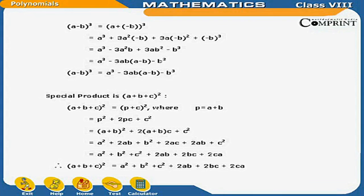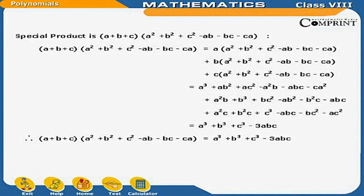Special product: (A+B+C)². Let P = A+B, so (P+C)² = P²+2PC+C² = (A+B)²+2(A+B)C+C² = A²+2AB+B²+2AC+2BC+C² = A²+B²+C²+2AB+2BC+2CA. Therefore: (A+B+C)² = A²+B²+C²+2AB+2BC+2CA.